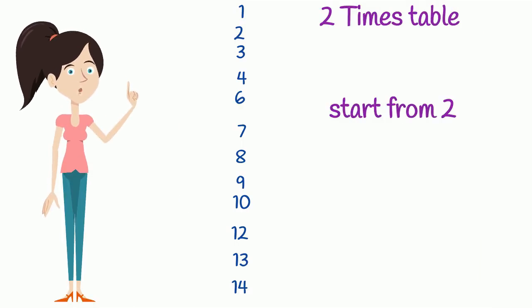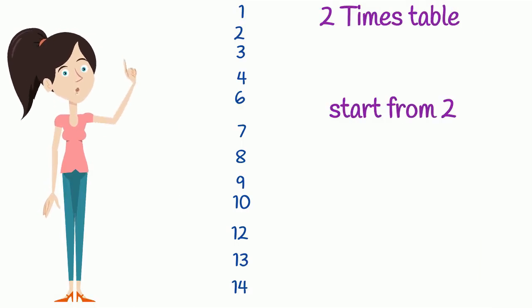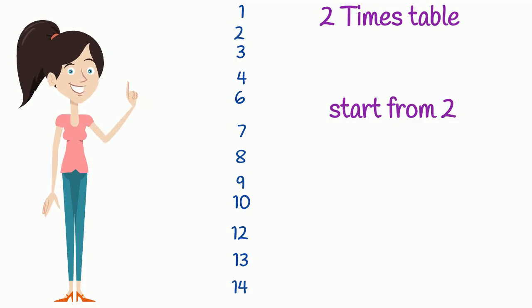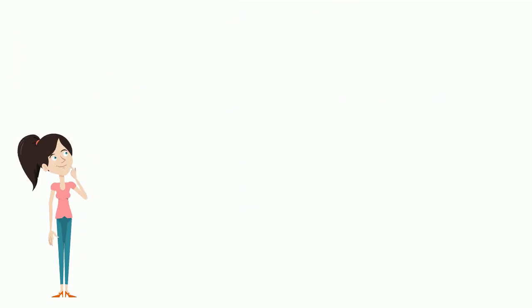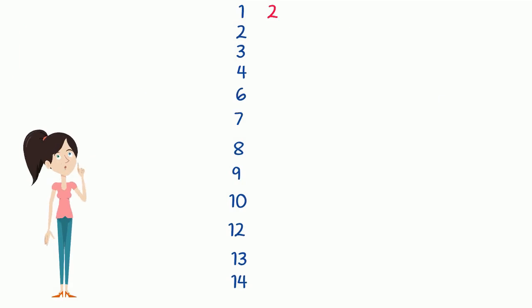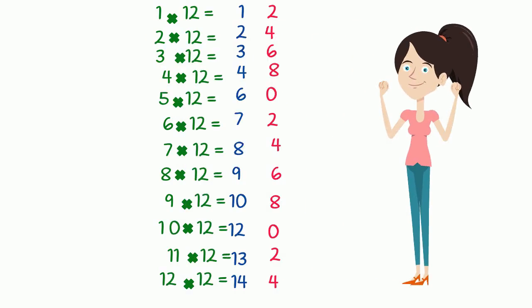And when I get to 0, I start from 2 again. So we write 2, 4, 6, 8, 0, 2, 4, 6, 8, 0, 2, 4. And now we have it, we have 12 timetables.